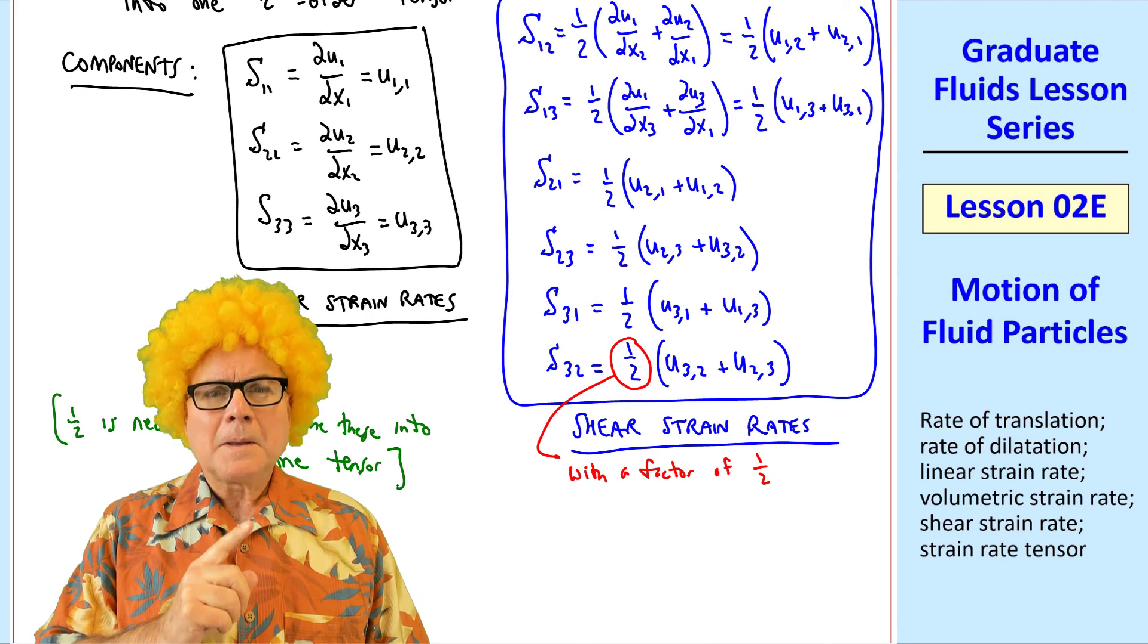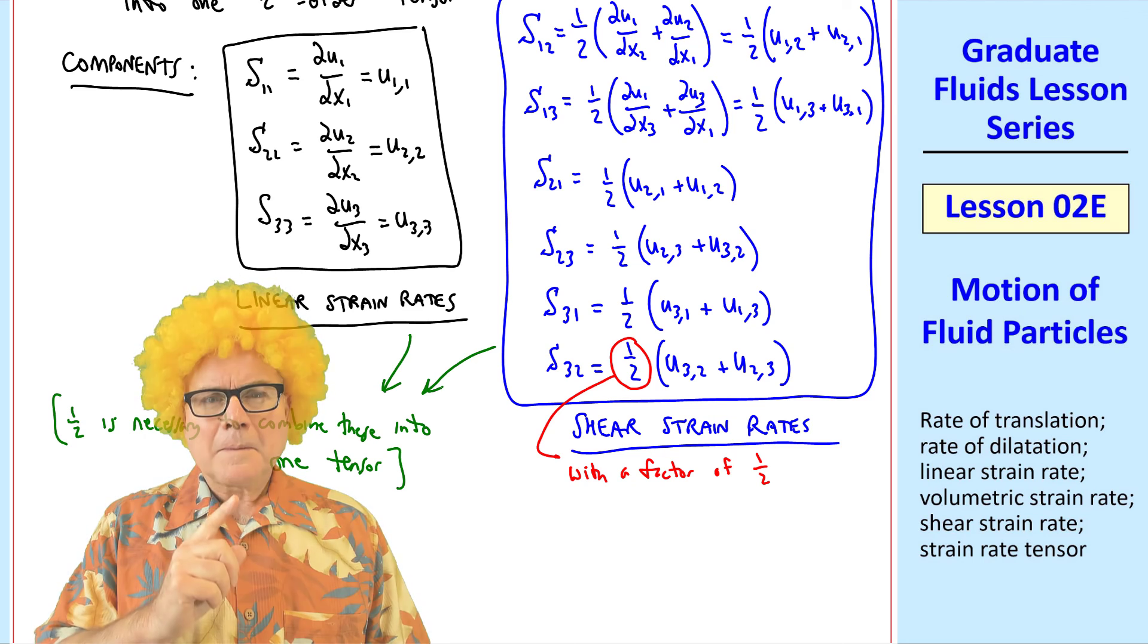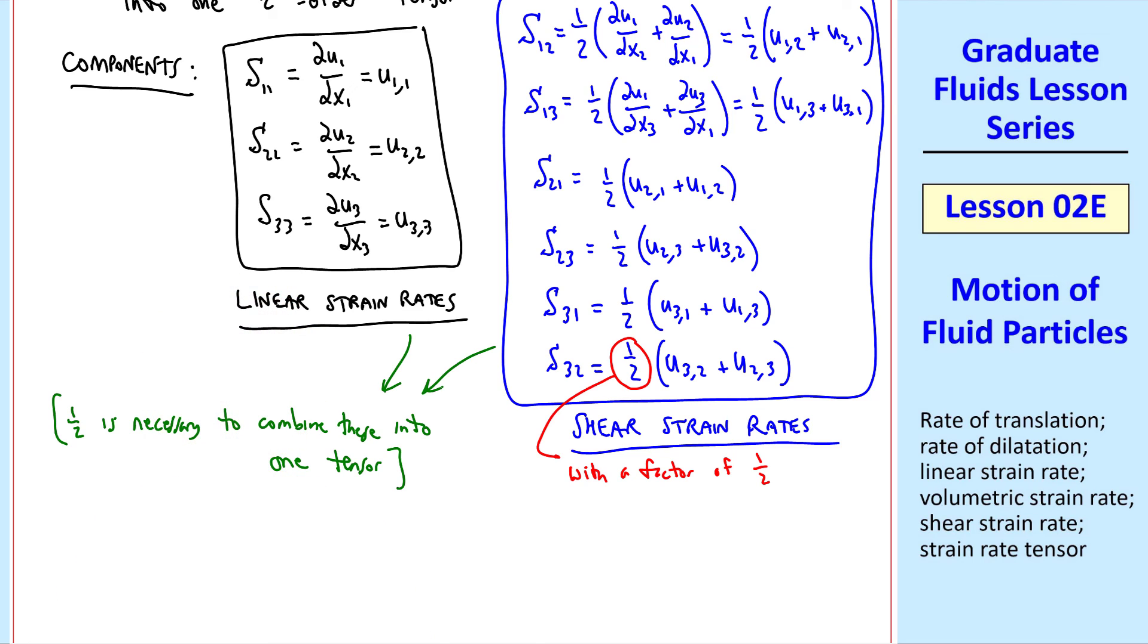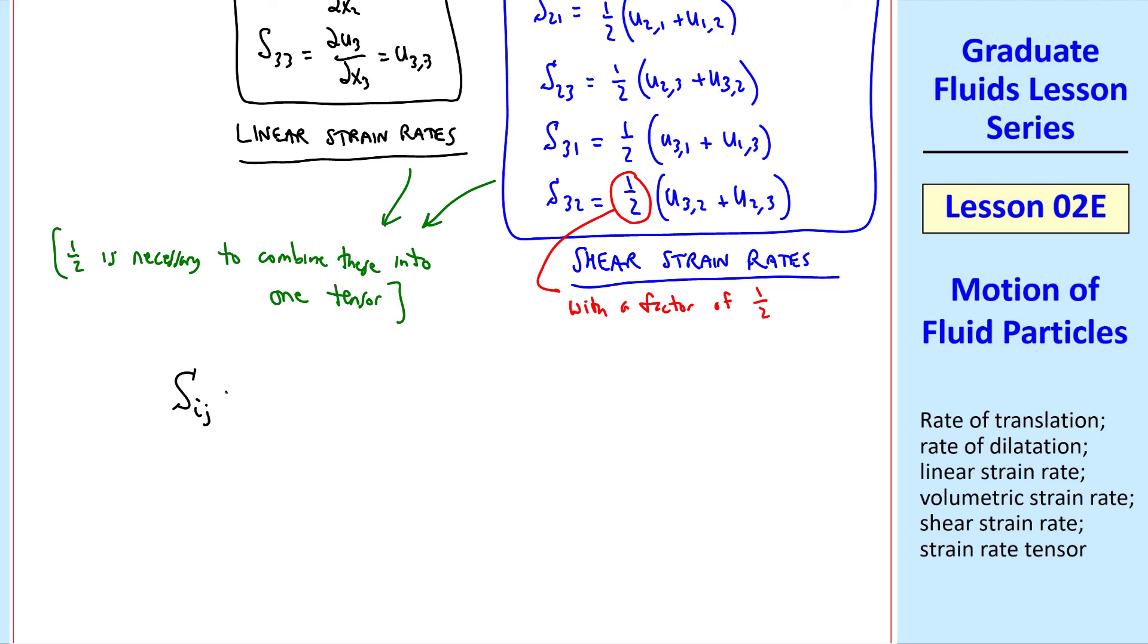That factor of a half wasn't there in these shear strain rates we previously defined. This factor of a half is necessary to combine these two into one tensor.